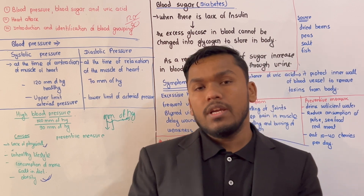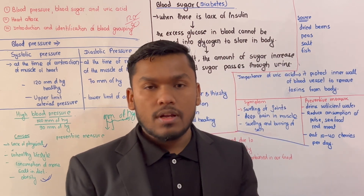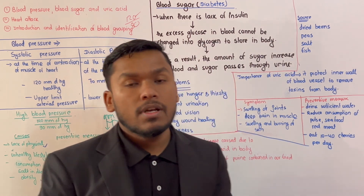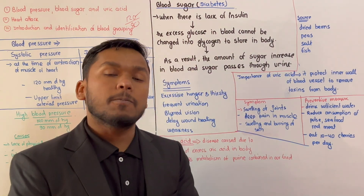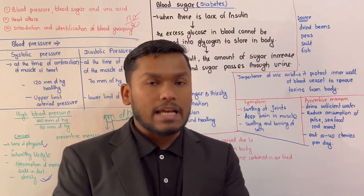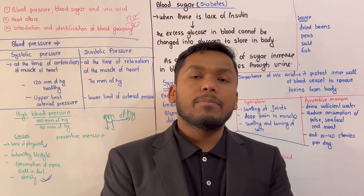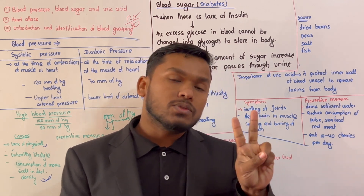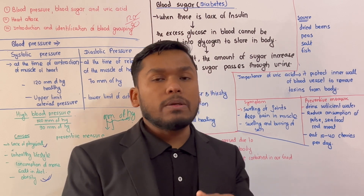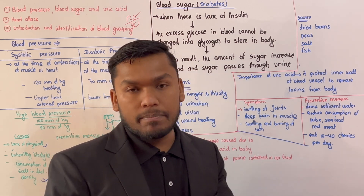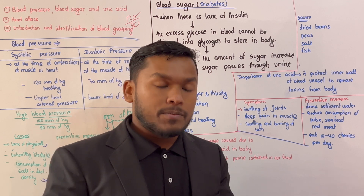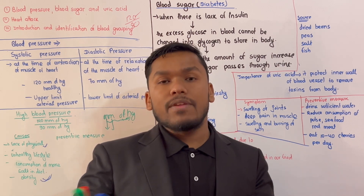There is also blood sugar to consider. What do we mean by diabetes? There are two types: Type 1 diabetes, which is genetic and present by birth, and Type 2 diabetes, which is caused by an unhealthy lifestyle.